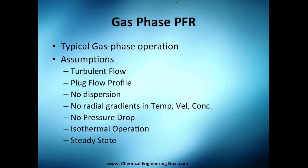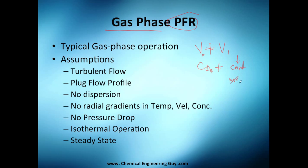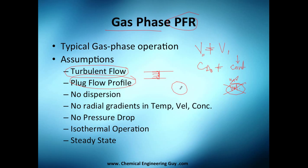We've seen the liquid phase PFR before; now we're going to analyze the gas phase. What's going to change is that volumes are not constant, which means concentrations cannot be treated as constant — since concentration is moles per volume, and that volume is no longer fixed. For gas phase operation, we assume turbulent plug flow: no dispersion, no radial gradient, no temperature changes, no pressure drop — isothermal, steady state.